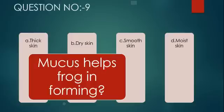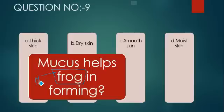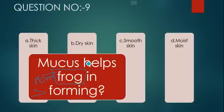In gymnosperm — for example, Pinus, Cycas — the endosperm is developed before fertilization. In Pinus, Cycas, and gymnosperm, the endosperm develops before fertilization. This is the key concept: in gymnosperms, the endosperm is developed before fertilization.